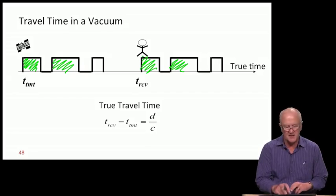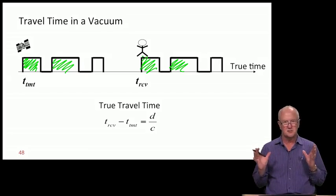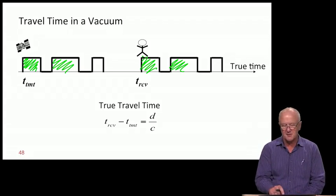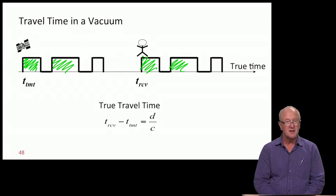The user marks that arrival time as time received, and the satellite marks the transmission time as time transmit. If both were measured in GPS time, we could write the true travel time as the difference, equal to distance d divided by speed of light c. And we would be done.